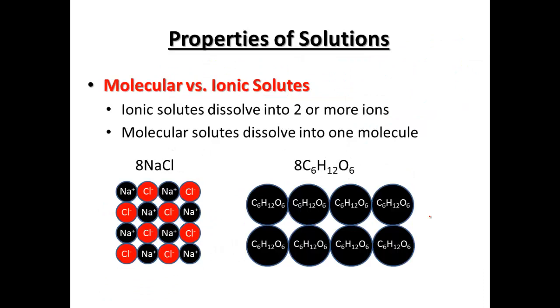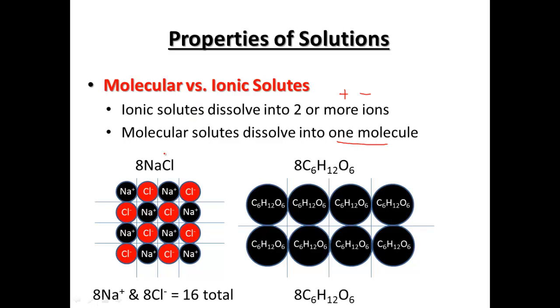So comparing molecular to ionic compounds. Ionic compounds are always going to make a positive and negative when they're dissolved. Molecular compounds just stay as one molecule. So if we notice like sodium chloride, when we dissolve sodium chloride versus when we dissolve glucose, we now have the positive and negative parts.